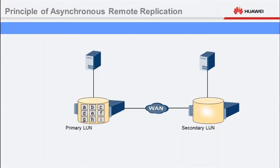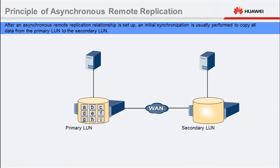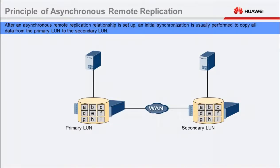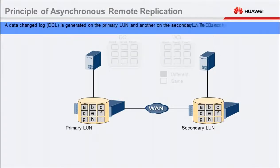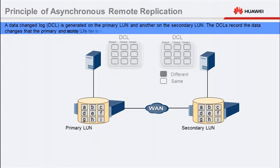Next, let's learn about how asynchronous replication is implemented. After an asynchronous remote replication relationship is set up, an initial synchronization is usually performed to copy all data from the primary LUN to the secondary LUN. A data changed log, DCL, is generated on the primary LUN and another on the secondary LUN.